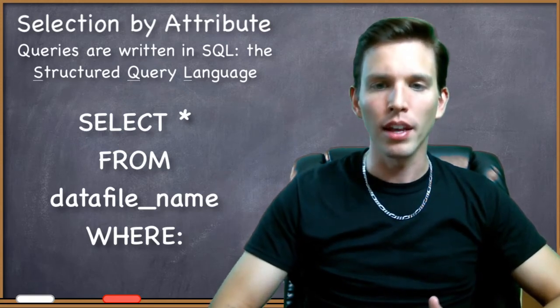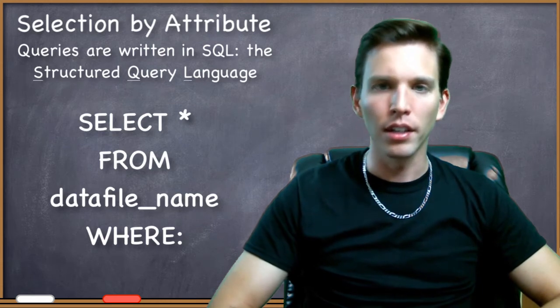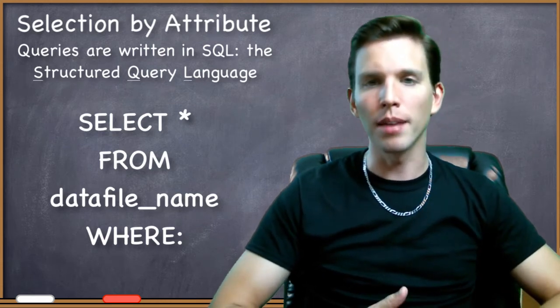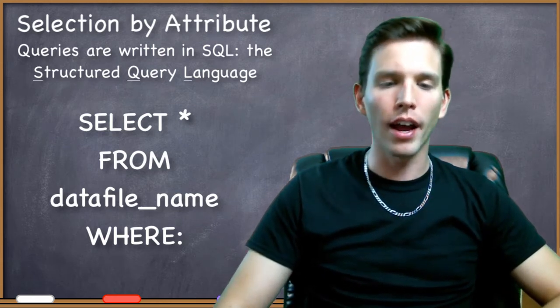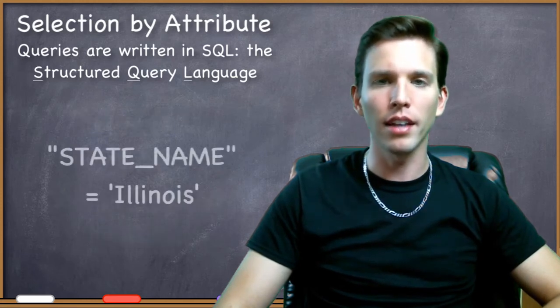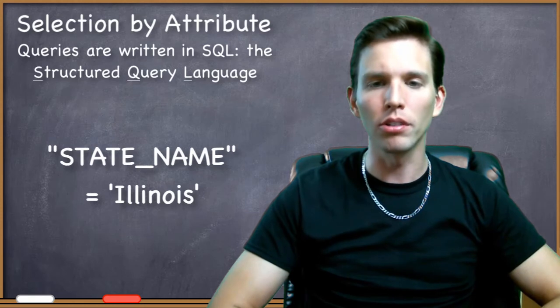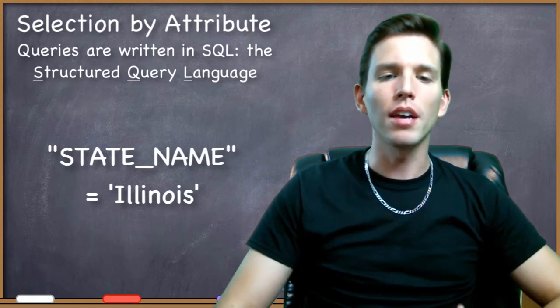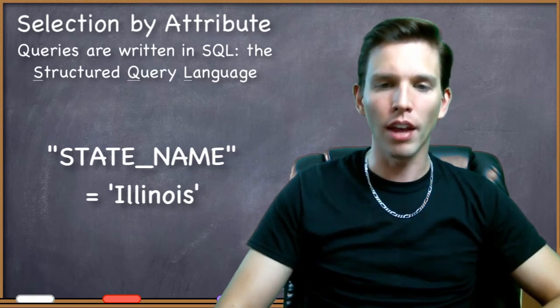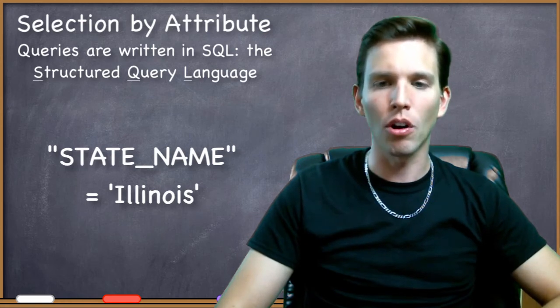Then I could type in: state_name in double quotes is equal to Illinois in single quotes. If the field in the states data file that contained all of the names of the states was called state_name, then it would go through and find that particular feature that has the state_name field say Illinois.